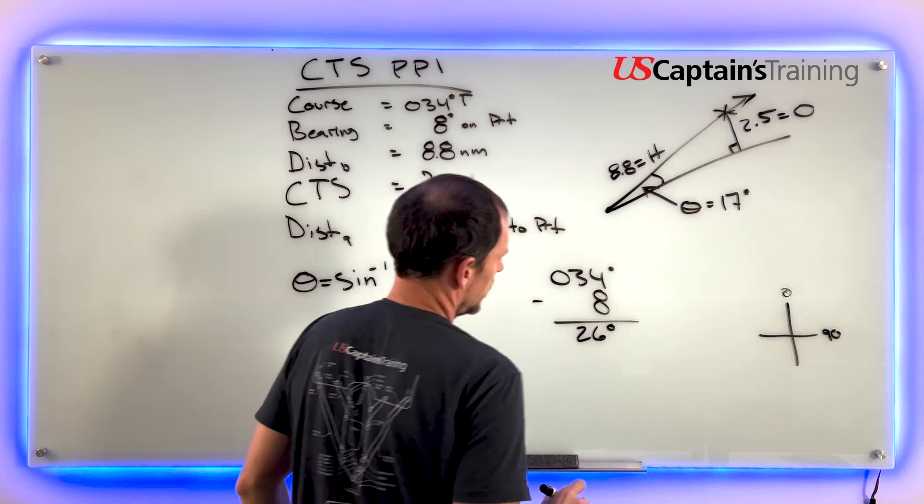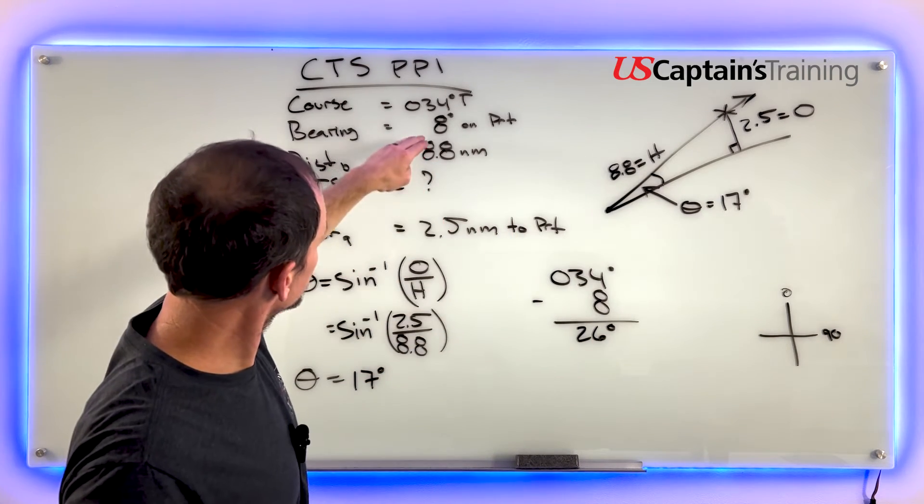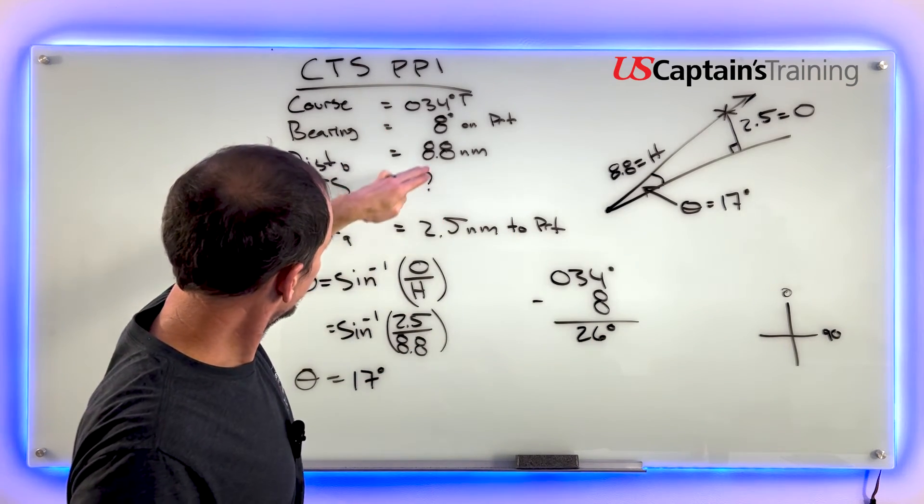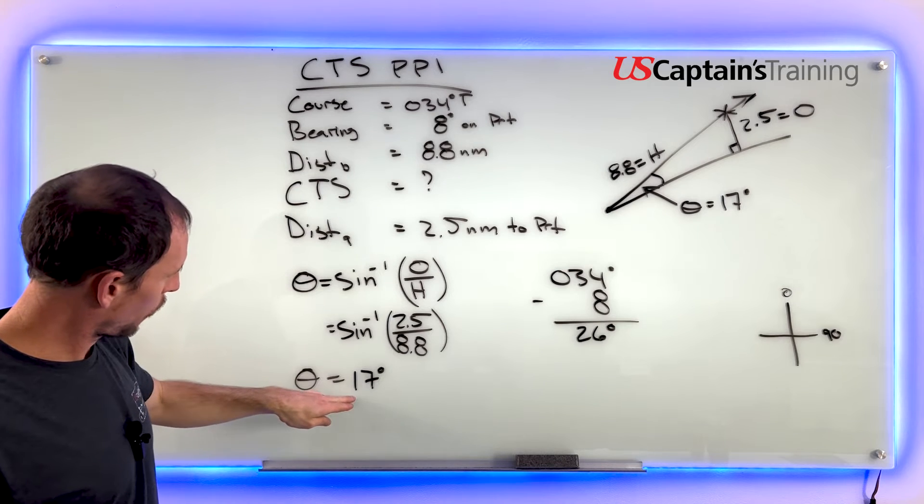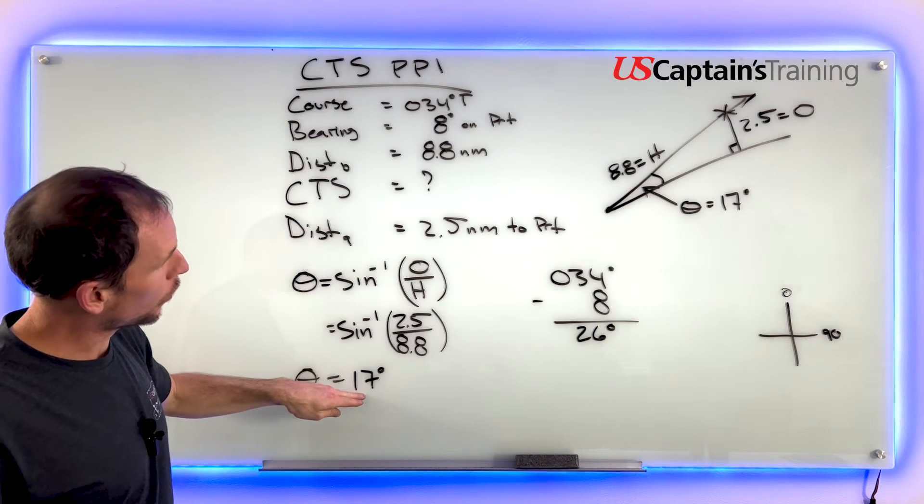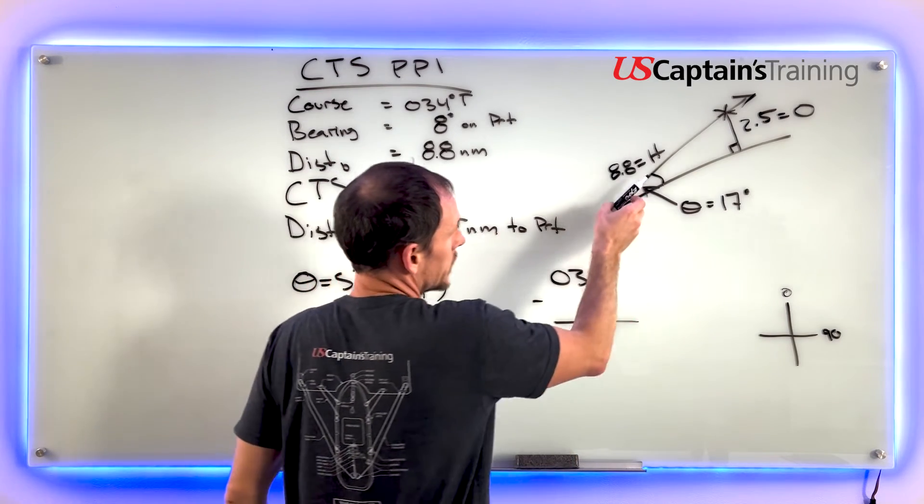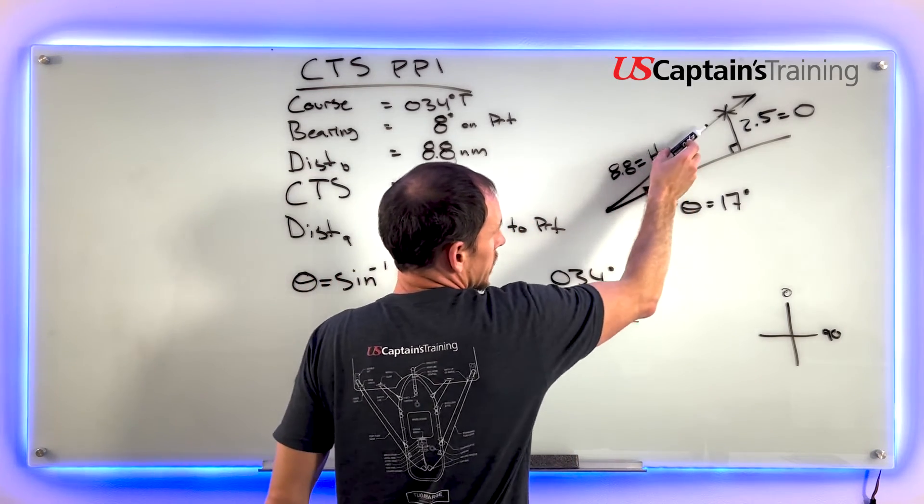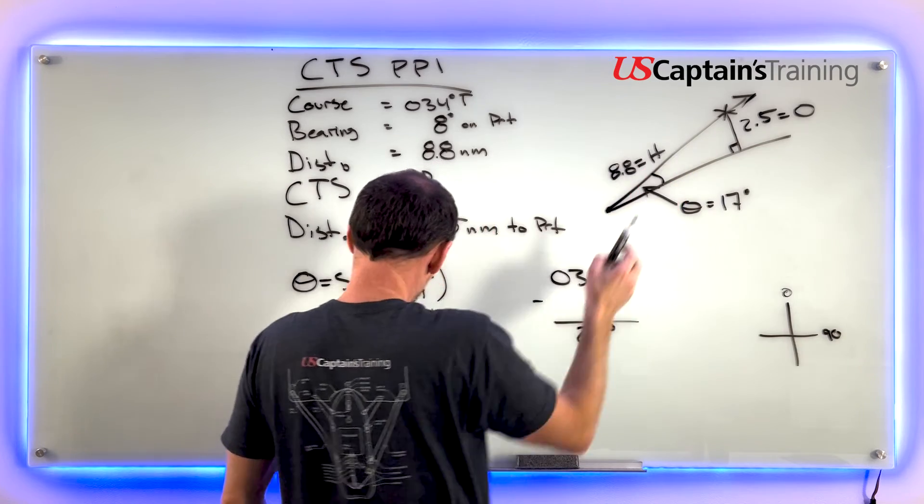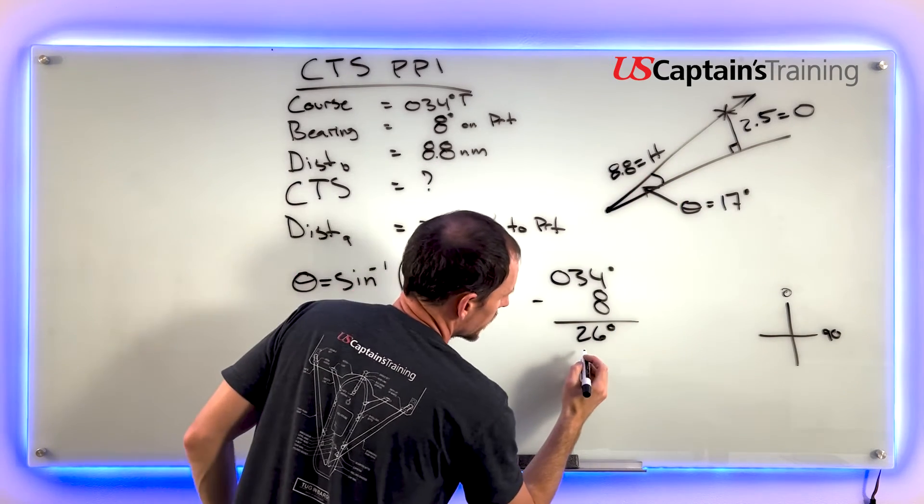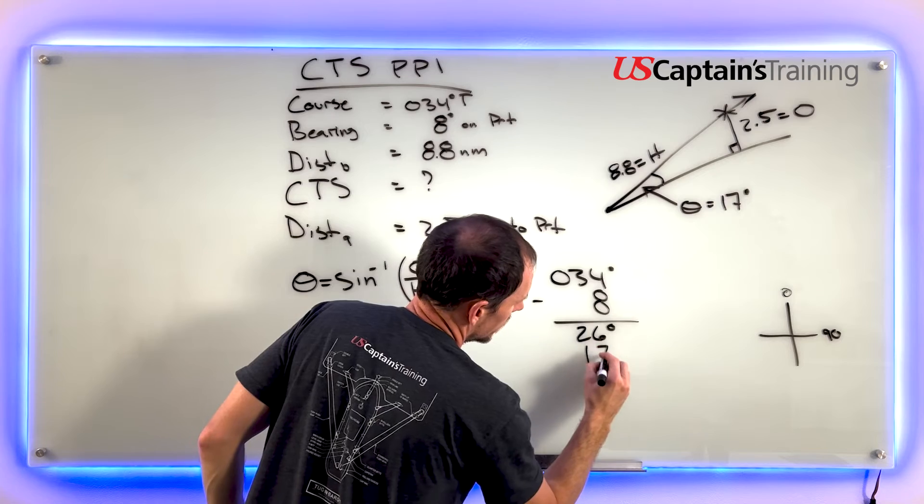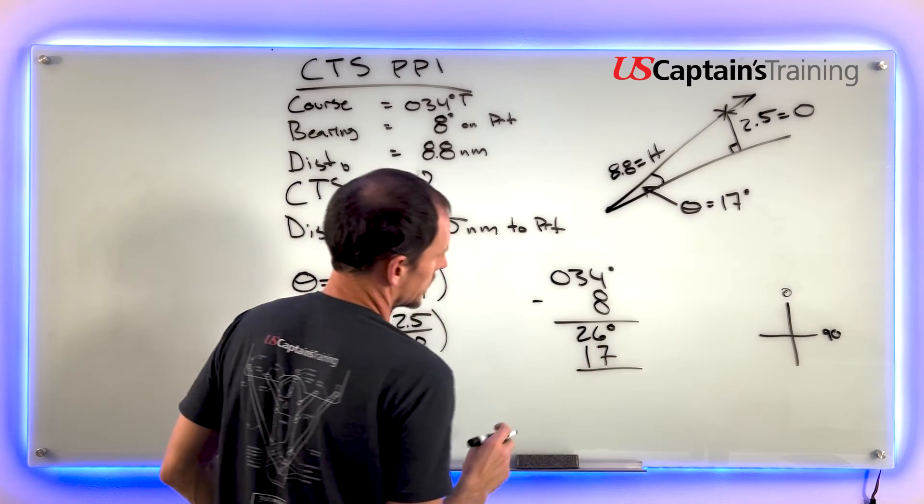Now we're on 26 and we've accounted for this bearing. Now we need to account for leaving that thing 2.5 miles to port. This line is represented at 26, and we correct 17 degrees. If we are on 26 and we leave this thing 2.5 nautical miles to port, we're correcting this way, so we're going to add.